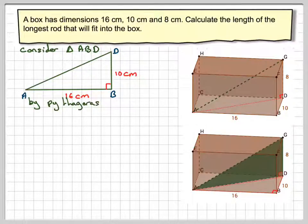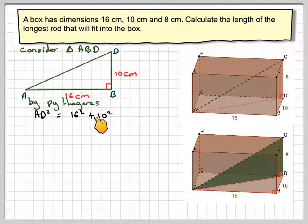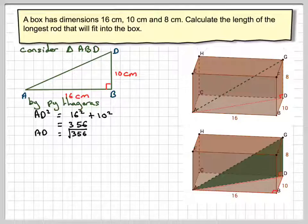So by Pythagoras, we can say that AD squared is equal to 16 squared plus 10 squared, because we'll find the length of the longest side. And that's going to be equal to 356. And then AD will be the square root of 356.